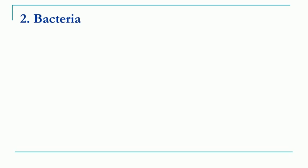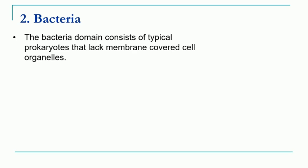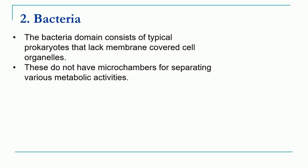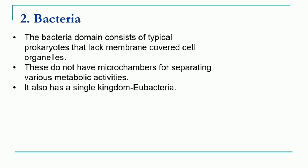Bacteria, the second kingdom established by this system, consists of typical prokaryotes that lack cell membrane-covered cell organelles. All the recent unicellular prokaryotes are included in the eubacteria kingdom. They do not have micro-chambers for separating various metabolic activities. As we know in prokaryotes, there is no demarcation or presence of any organelles, so all metabolic activities take place within that single cell as a unit. So this kingdom was called eubacteria.